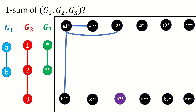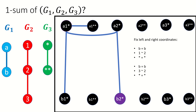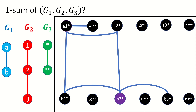Let's do one more vertex together: b2★. Again, we want to find all vertices that have one adjacent coordinate and share the other two coordinates with b2★. Fixing the middle and right coordinates, a2★ satisfies our criteria. Fixing the left and right coordinates, two vertices satisfy our criteria: b3★ and b1★. Finally, fixing the middle and left coordinates, b2★★ satisfies our criteria.